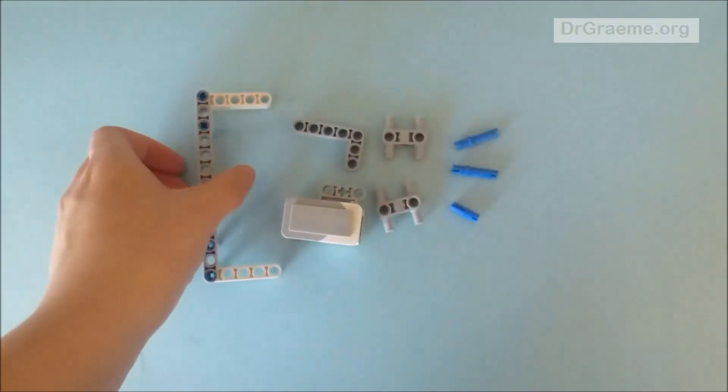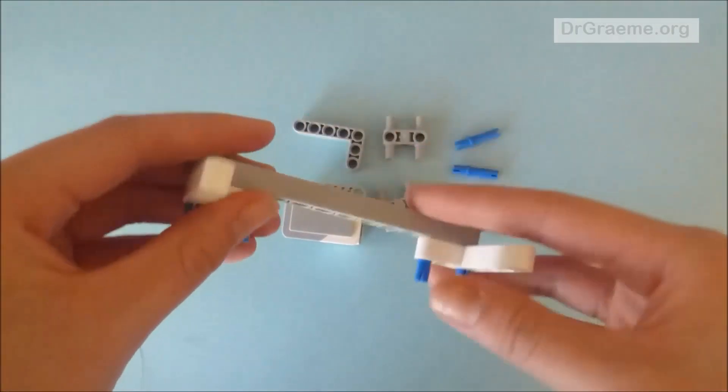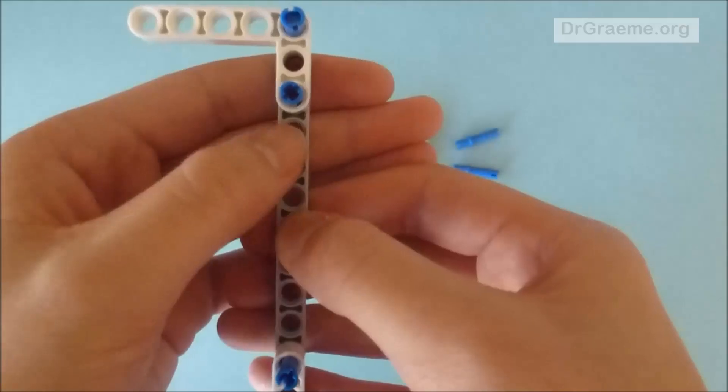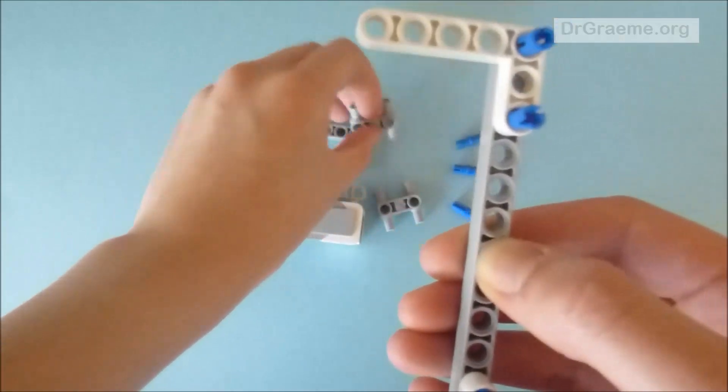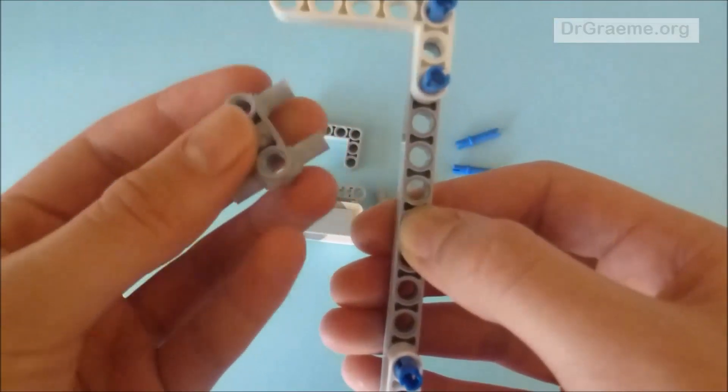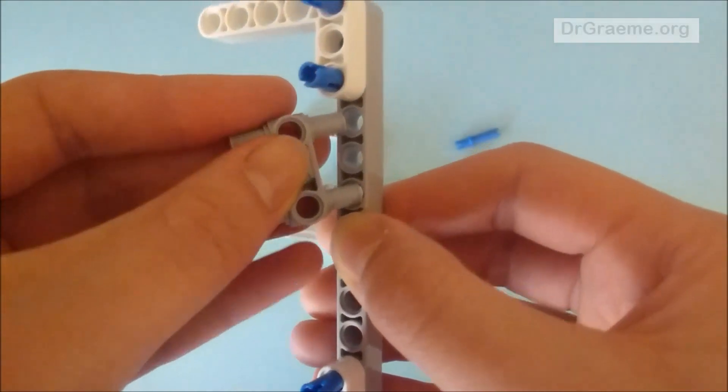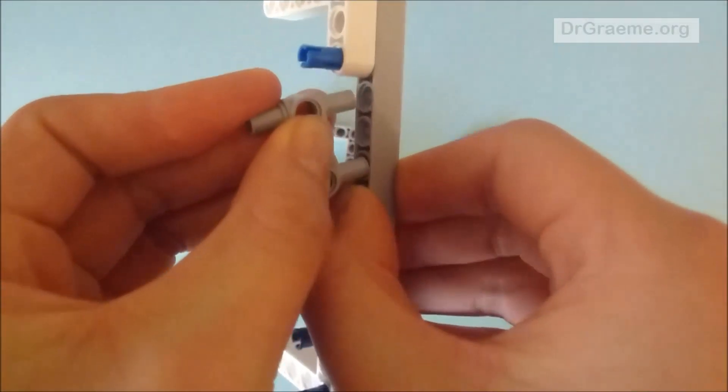So firstly we take the beam. We're going to take one of the H pieces - it doesn't matter which end you put them in, but you place them in these three holes.